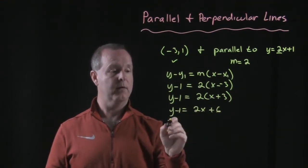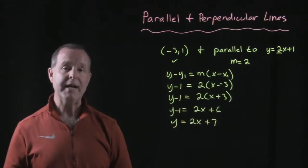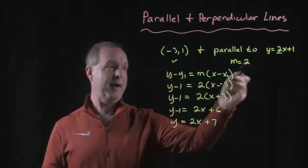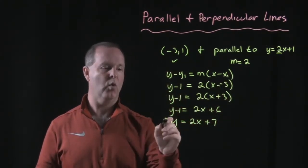So try to add 1 to both sides. And there is the equation of a line that's parallel to 2x + 1, but this one goes through the point (-3, 1).